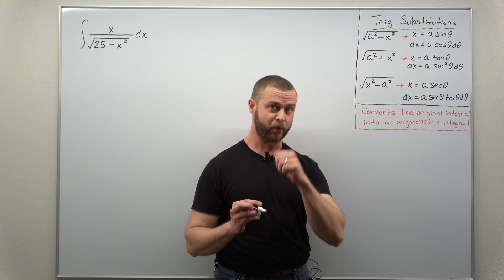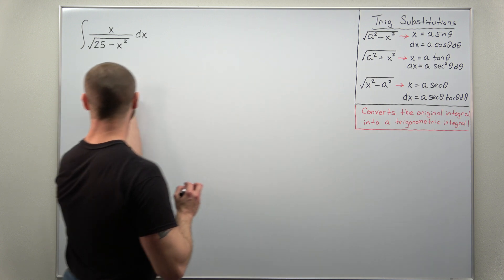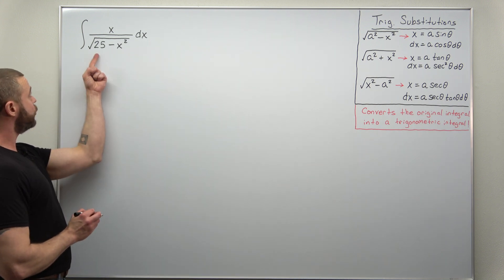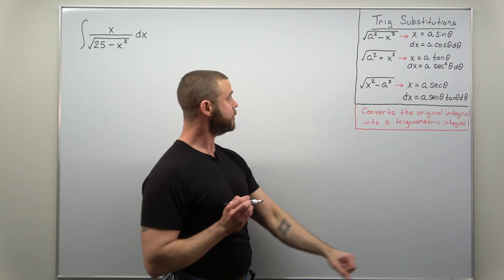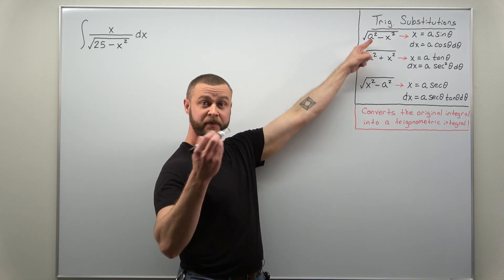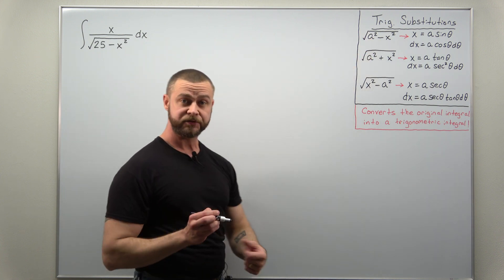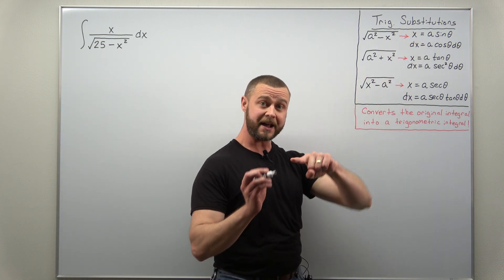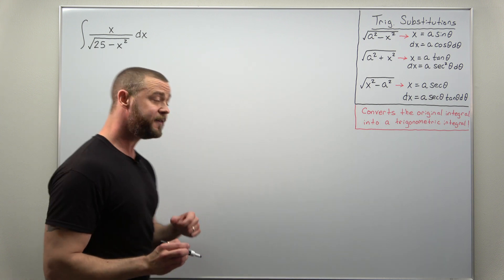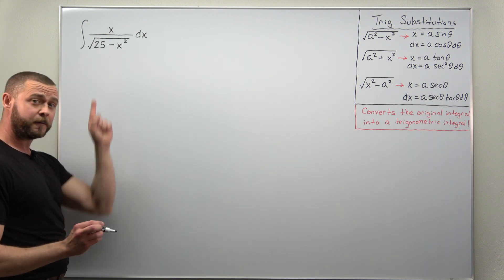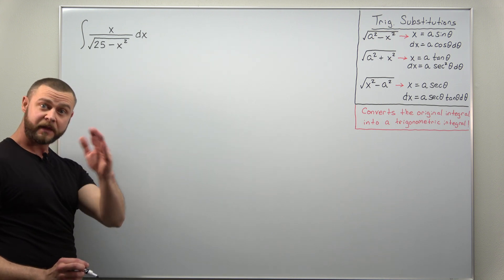We're going to pick up with the first step: taking a look at our integral's radical or square root and determining the substitution. In our denominator we have the square root of 25 minus x squared. We look at our three types — the first one fits that form: a number minus x squared inside the square root. So we're going to use x equals a times sine of theta. The value of a comes from 25, which is 5 squared, so a equals 5.